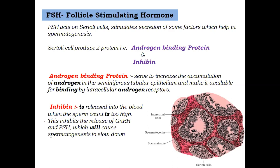The Sertoli cells produce two types of proteins: one is Androgen Binding Protein (ABP), and the other is Inhibin. Androgen Binding Protein accumulates the androgen hormone within the tubular epithelium of the seminiferous tubule. This accumulation helps support spermatogenesis.